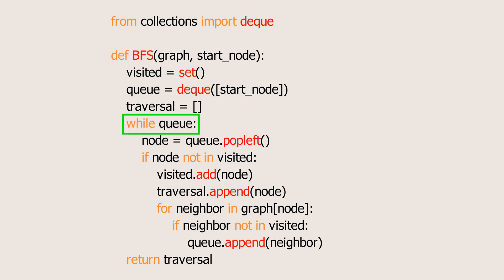Next, a while loop runs as long as the queue isn't empty. Inside the loop, we first pop the element from the front of the queue and check if this node has been visited. If it hasn't, we add it to both the visited set and the traversal list. Then, we check each neighbor of the current node. If a neighbor is unvisited, we add it to the queue and continue the process.